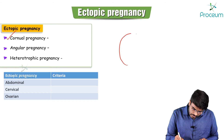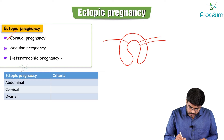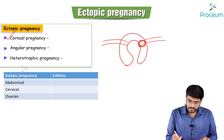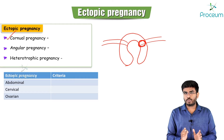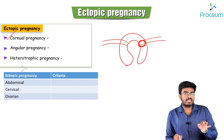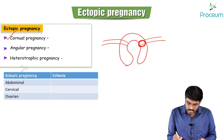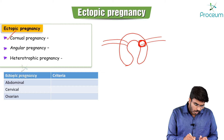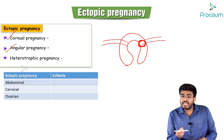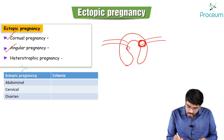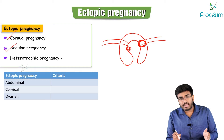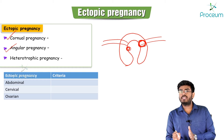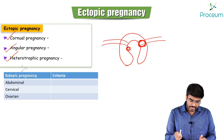Cornual pregnancy is implantation in the cornual region of the uterus, which is the interstitial part of the fallopian tube. It is a type of ectopic pregnancy because implantation is outside the uterine cavity. Angular pregnancy, on the other hand, is an intrauterine pregnancy that happens near the angle of the uterus — it's still inside the uterine cavity. So angular pregnancy is intrauterine; cornual pregnancy is ectopic.